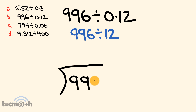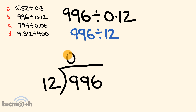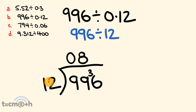So we have 996 divided by 12. First, how many times does 12 go into 9? It doesn't, so we carry that 9 along. How many times does 12 go into 99? 12 goes into 99 eight times — 12 times 8 is 96 — so there are 3 left over. Next, how many times does 12 go into 36? It goes in evenly three times.